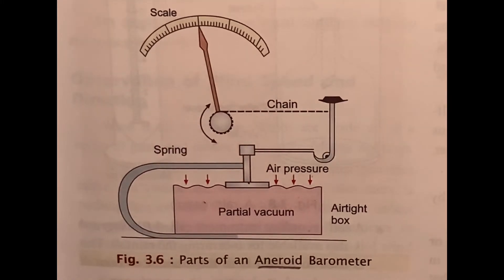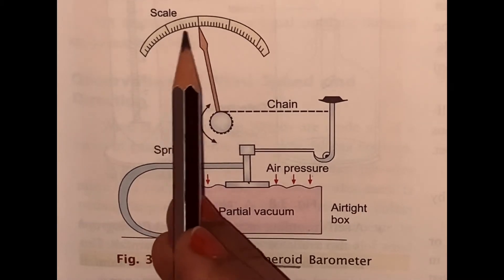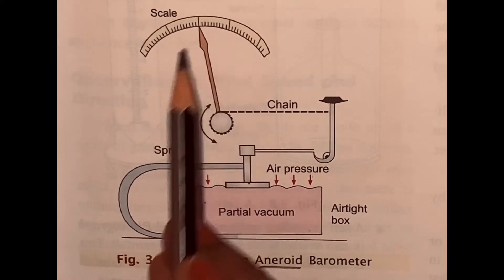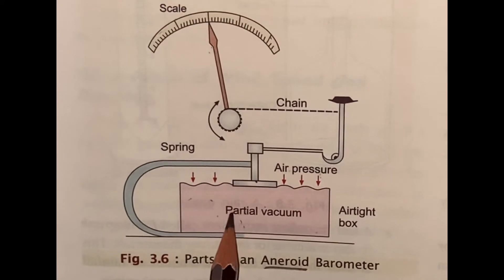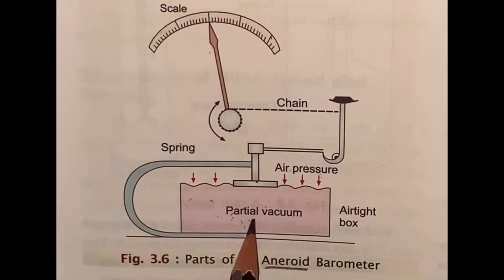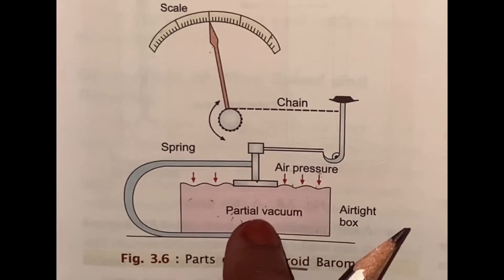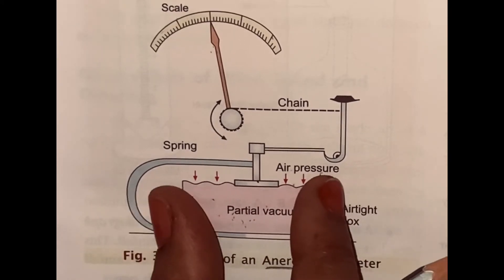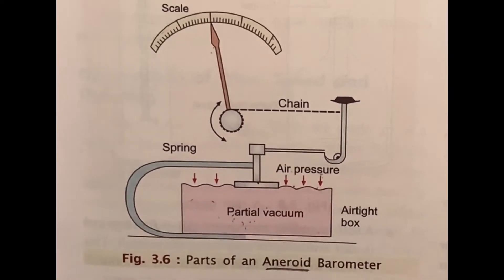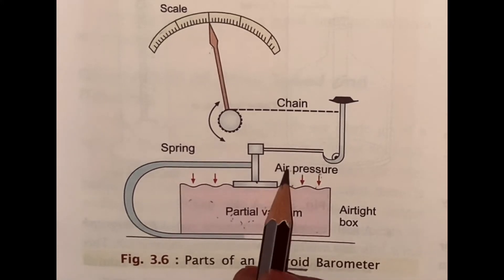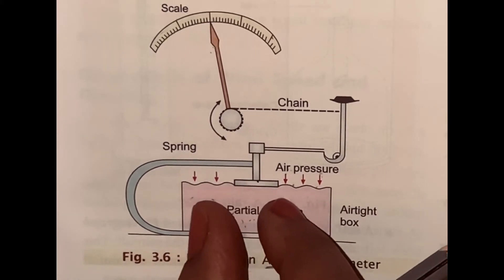This metal chamber or box has elastic properties, which means when atmospheric pressure increases, this chamber gets compressed. Just opposite, when the atmospheric pressure decreases, the chamber gets expanded.